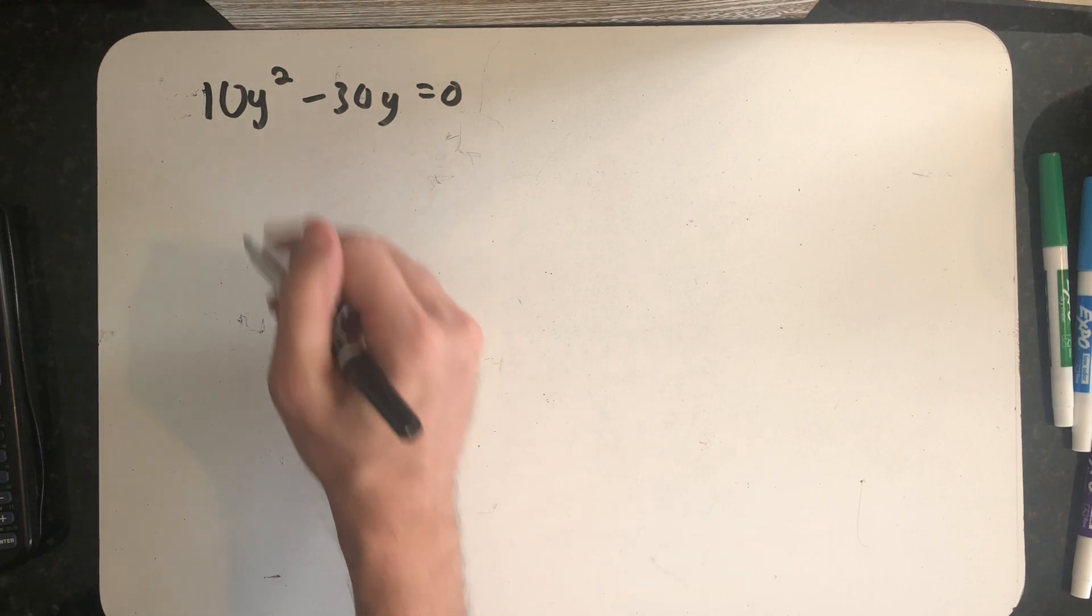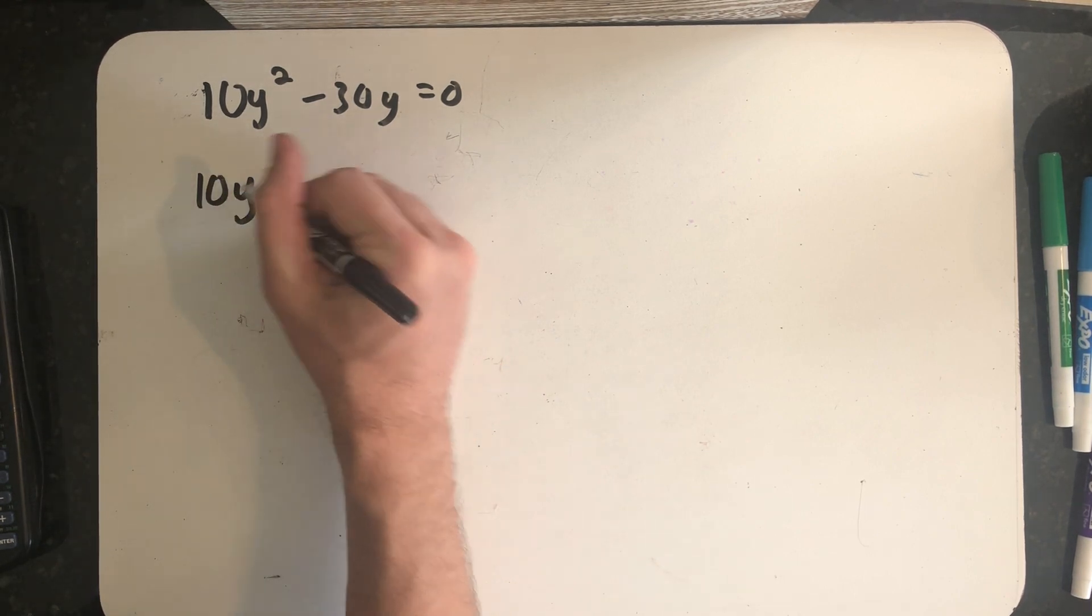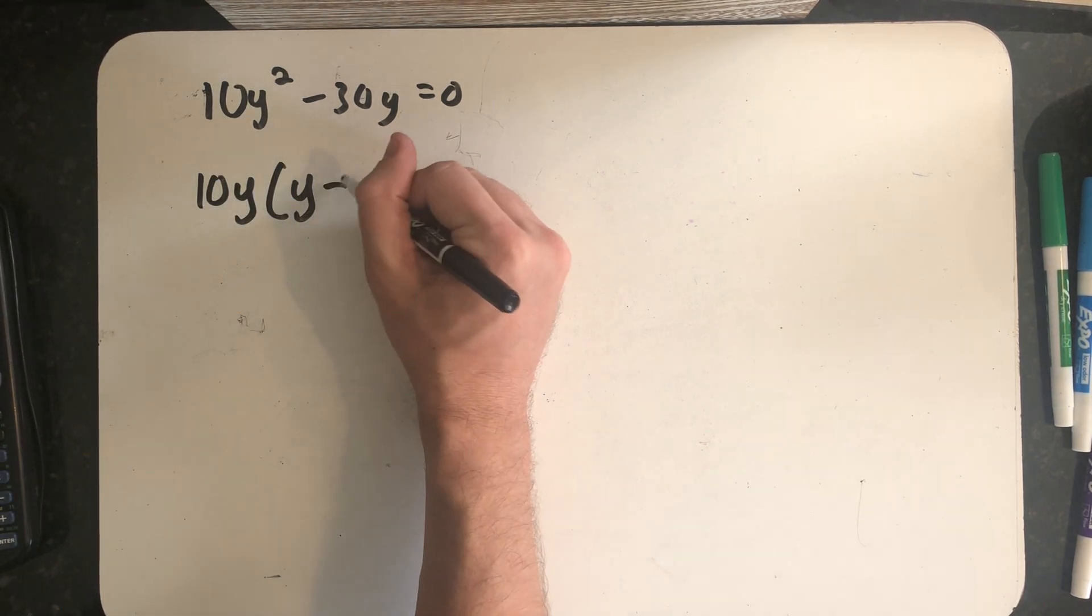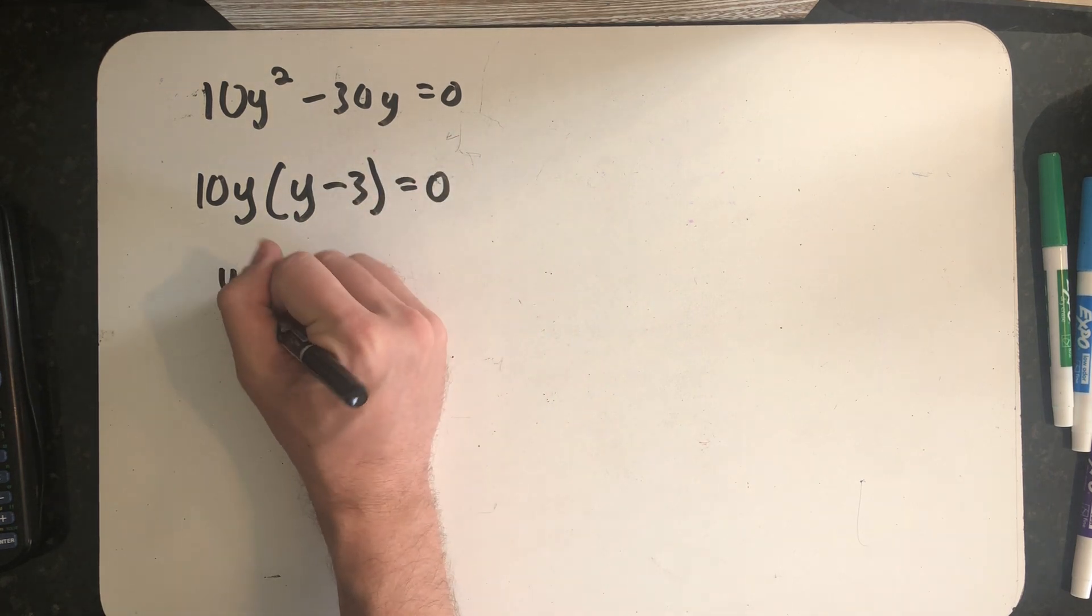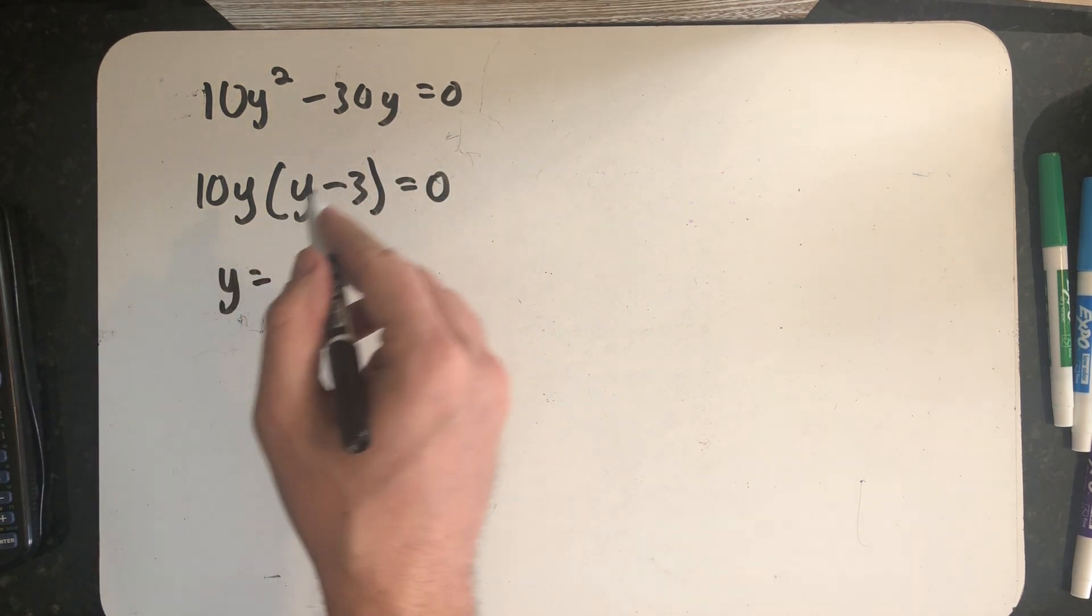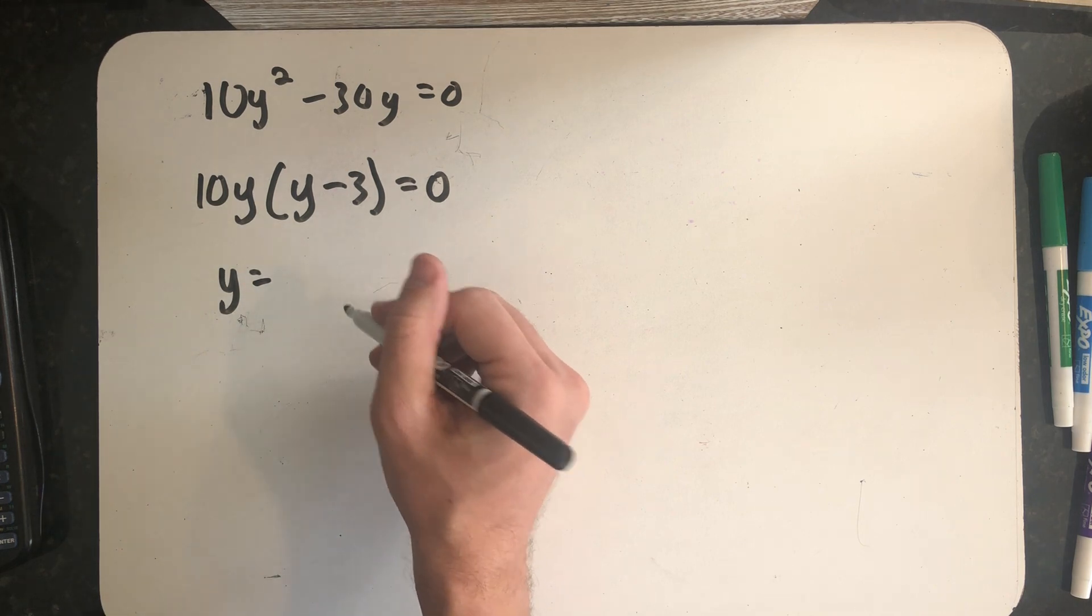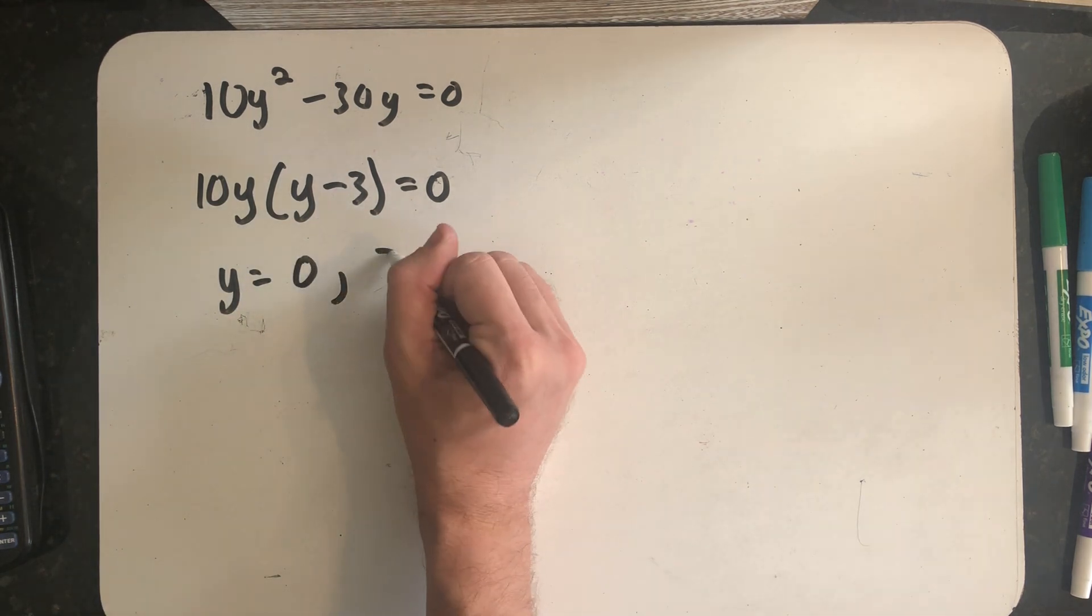So let's factor out a 10y. So I have 10y times (y minus 3), letting me know that y is either 0 or positive 3.